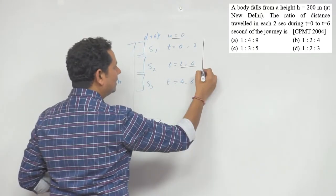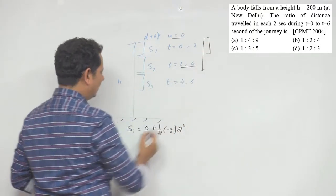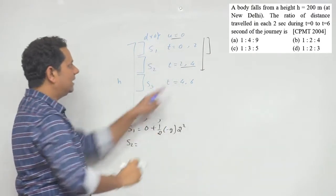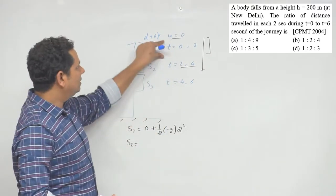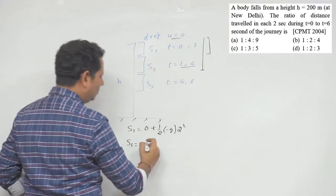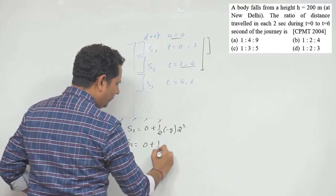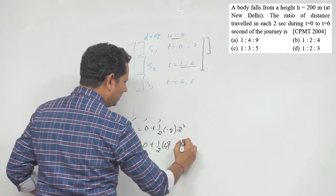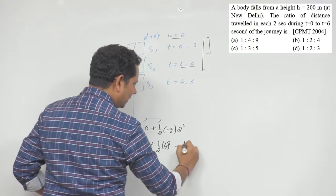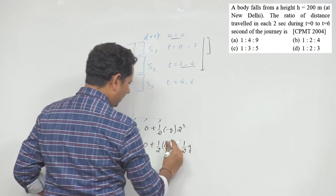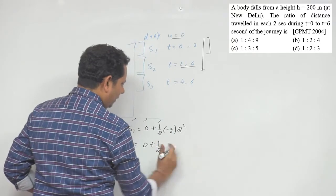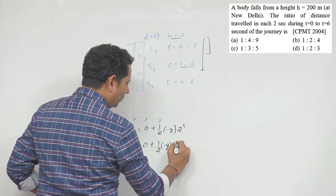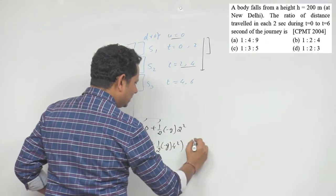To find S2, we take the total distance covered in 4 seconds and subtract the distance covered in the first 2 seconds. So S2 equals (0 + half G × 4²) minus (half G × 2²). This way we don't need to worry about the initial velocity separately.